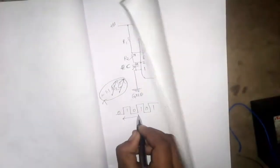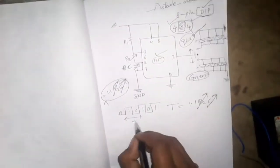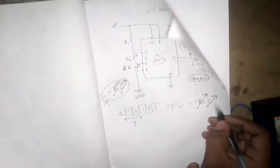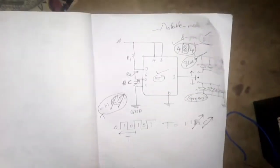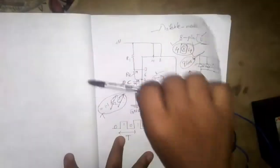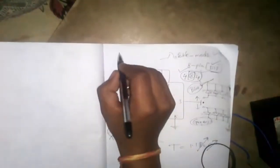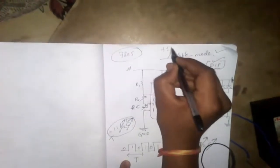Now the time period between this is decided by 1.1 RC. Now let us check practically whether it's working or not. See, along with this I'm using a regulator called 7805. If you're using apart from 5 volts you need to connect this IC.